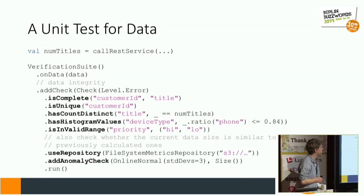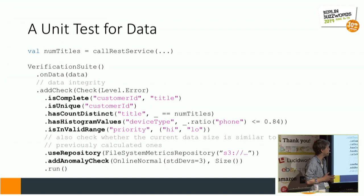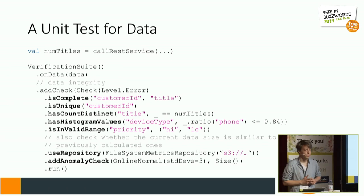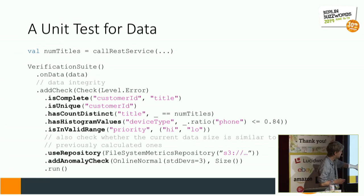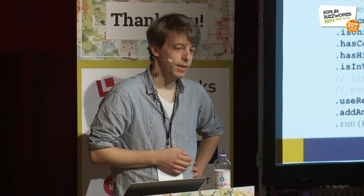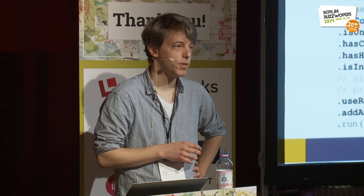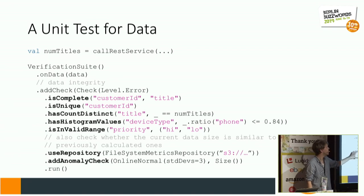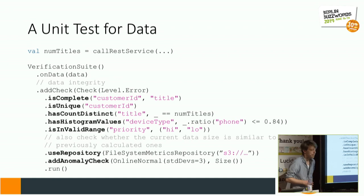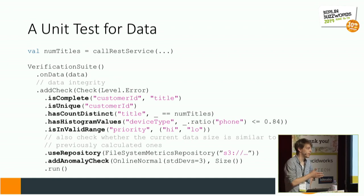You can also assert against histogram values — for example, compute the histogram of a particular column, in this case device type, and assert that no more than 84% of entries should be phones, and that priority should always be either high or low. The anomaly check is a bit special, as it makes use of a metrics repository, which I'll dive into in a minute. Essentially, this check asserts that the size of the dataset is similar to previously observed ones — for example, if you compute that every day.